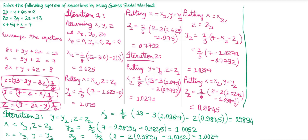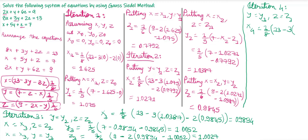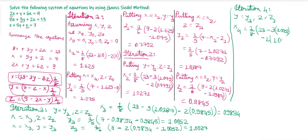Observing x2, x3, y2, y3 and z2, z3, we still don't get nearly equal approximations, so we go to the fourth iteration. We put y = y3 = 1.0052 and z = z3 = 1.0027 to find x4 = (1/8)(13 - 3×1.0052 - 2×1.0027) = 0.9974, which is near to 1.